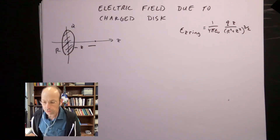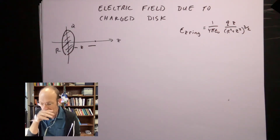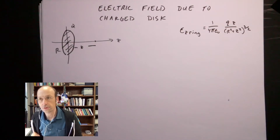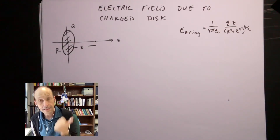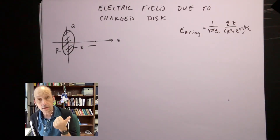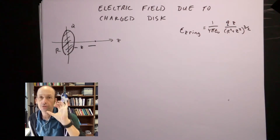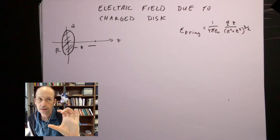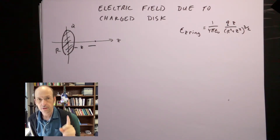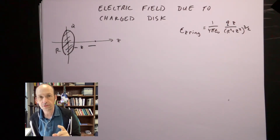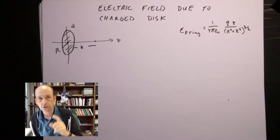I'm continuing to work through my charge distribution calculations. I did the electric field due to a charge ring, and I'm going to use that answer to find the electric field due to a charge disk.